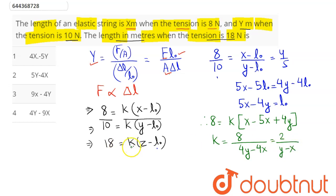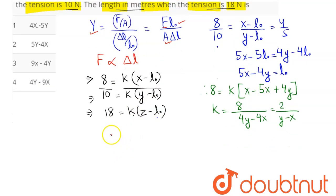Now substituting value of K and L0 in third equation, we have here 18 is equal to this can be written here as 2 divided by Y minus X into Z here minus L0. L0 is 5X minus 4Y, so this becomes minus 5X plus 4Y.